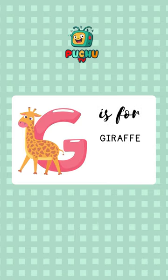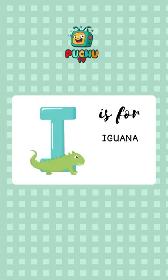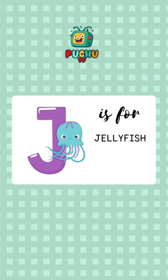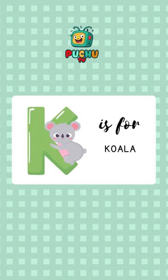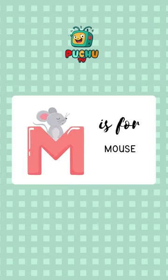G is for giraffe, H is for horse, I is for iguana, J is for jellyfish, K is for koala, L is for lion, M is for mouse.